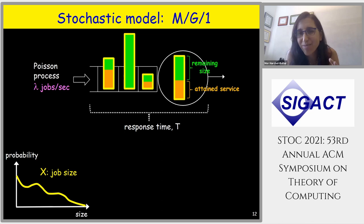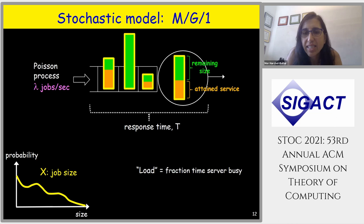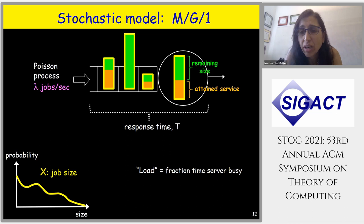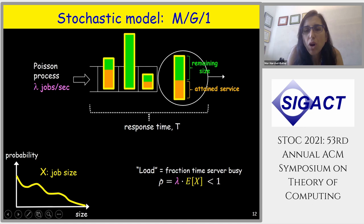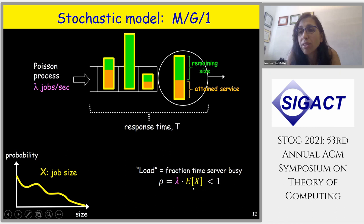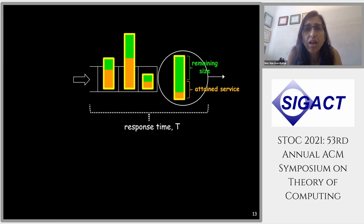The key term to remember besides response time T is load, denoted rho. Load is the fraction of time the server is busy — think of it as traffic intensity or utilization. Load rho equals the arrival rate lambda times the mean job size E[X]. For example, three jobs per second each bringing a quarter second of work gives load three-quarters. This load must be less than one.